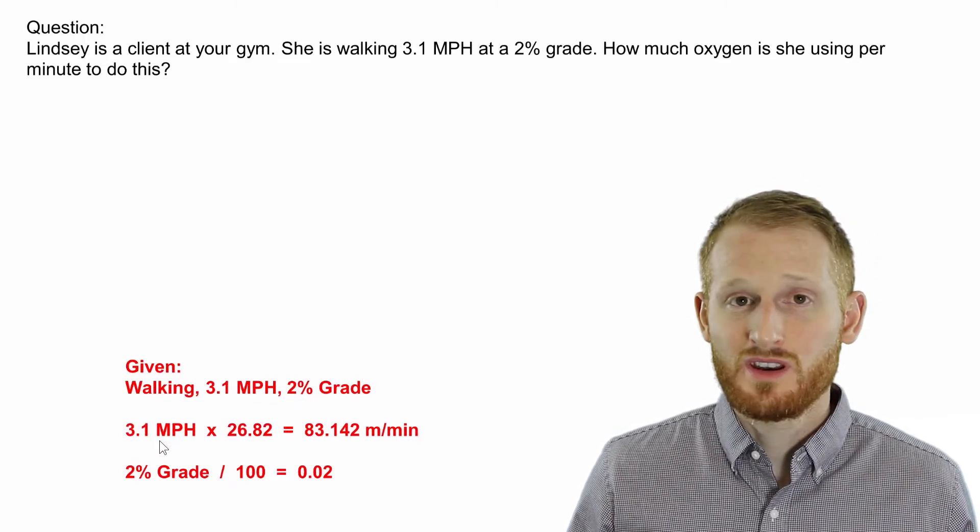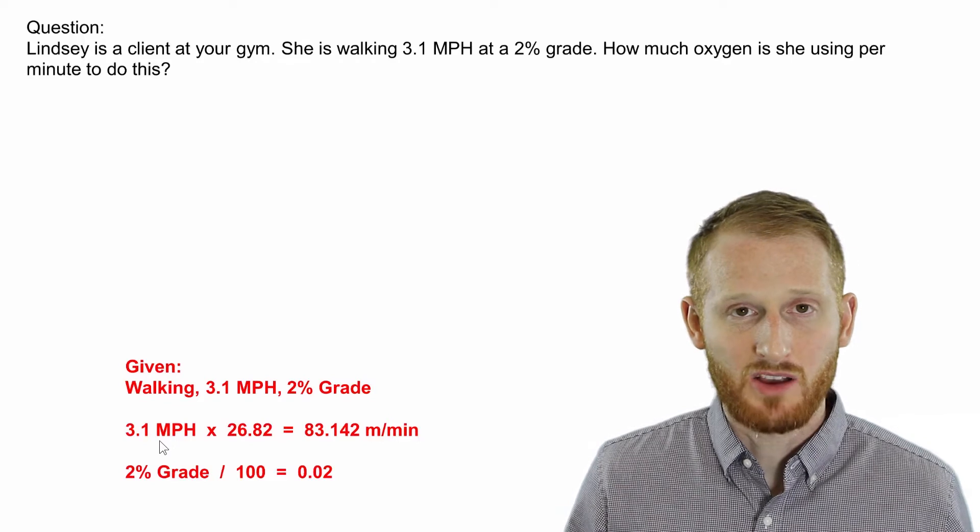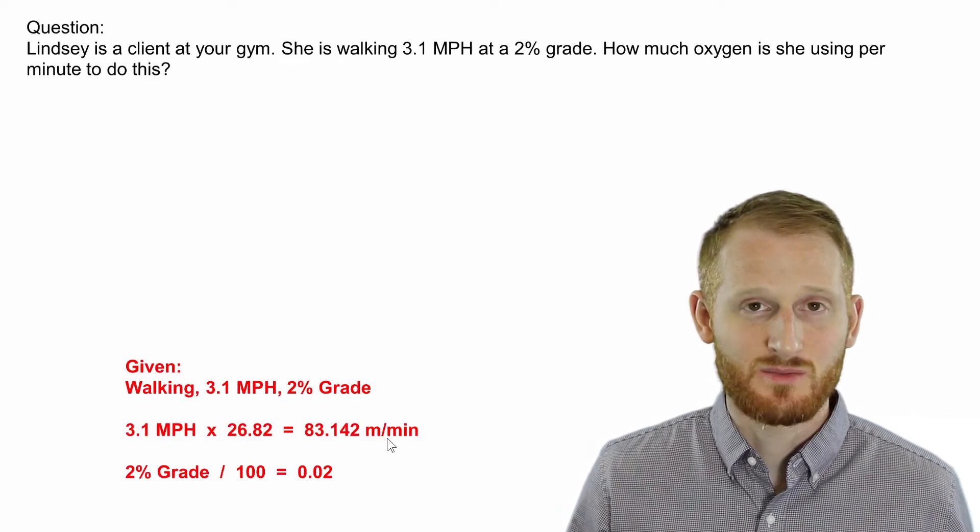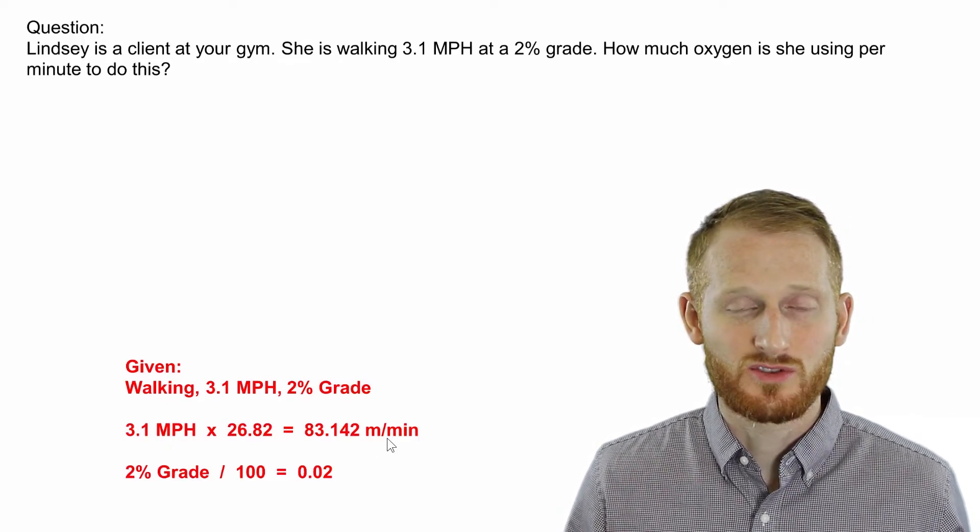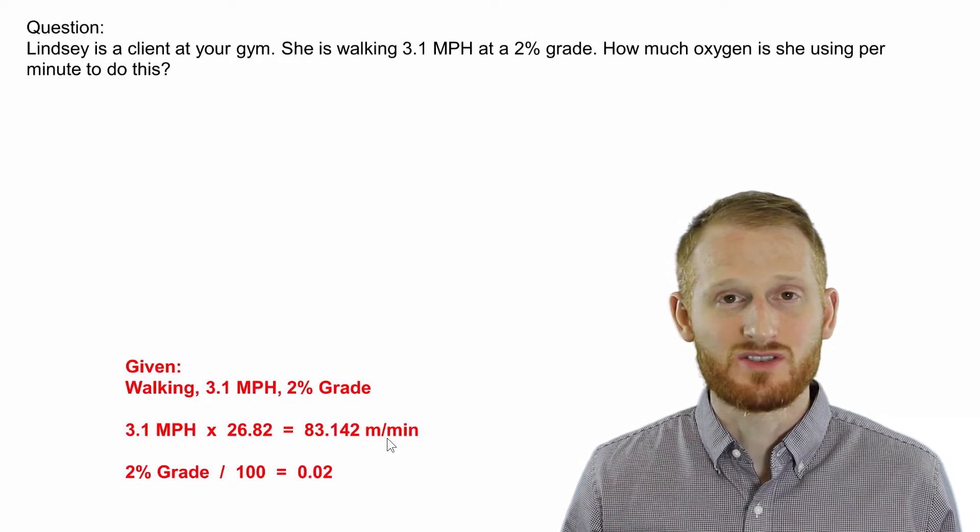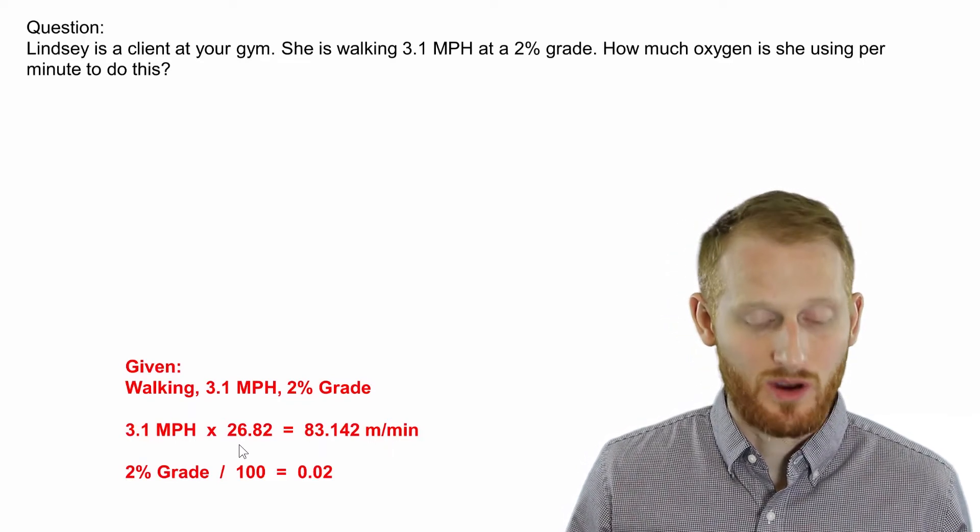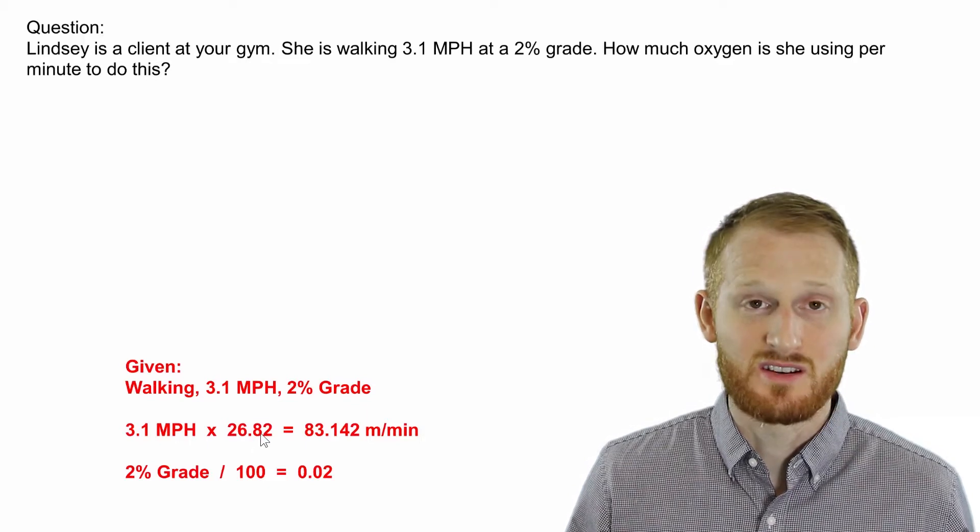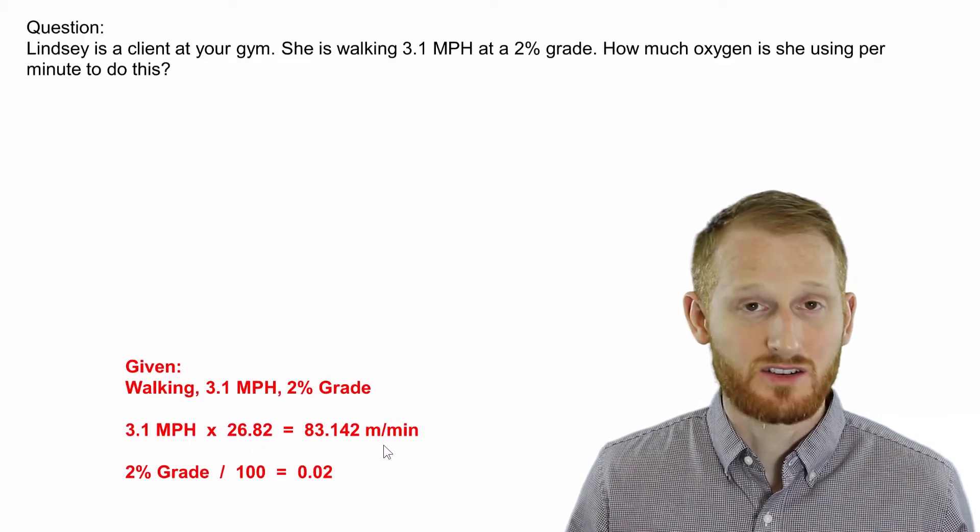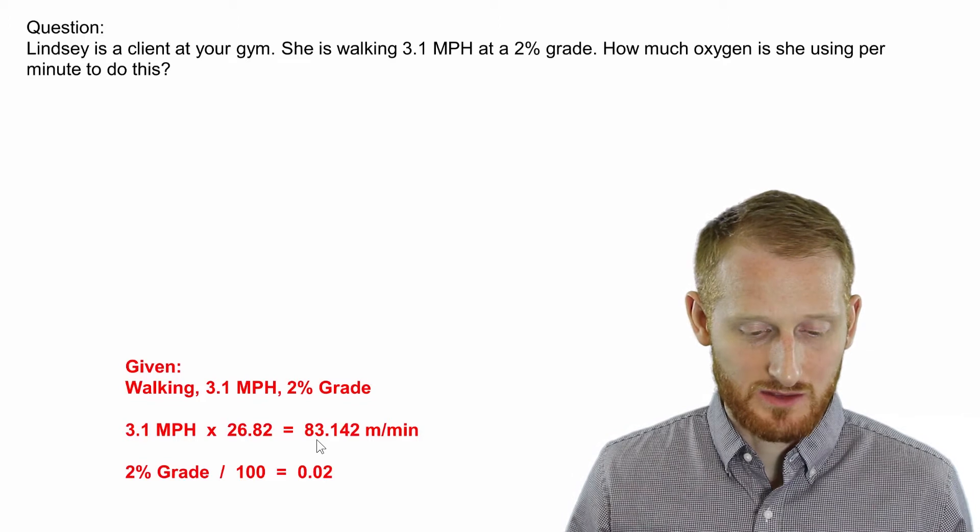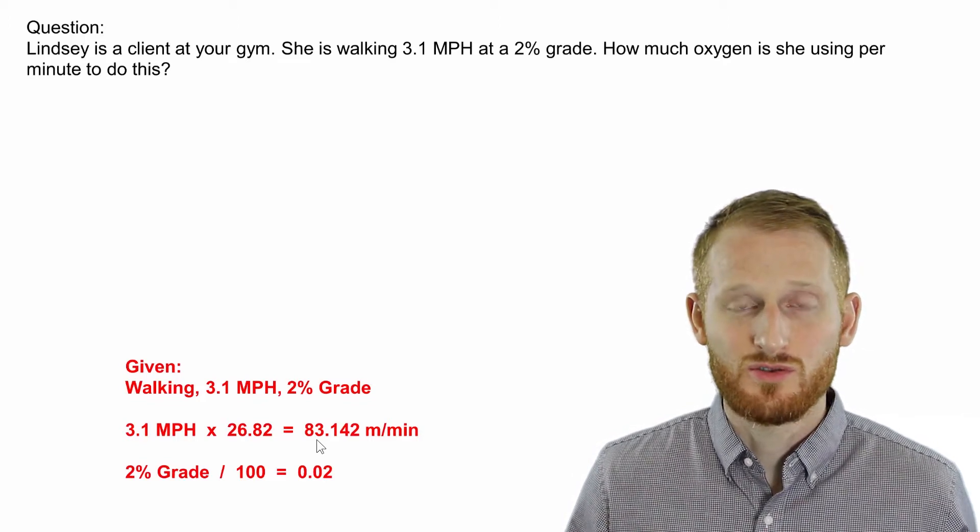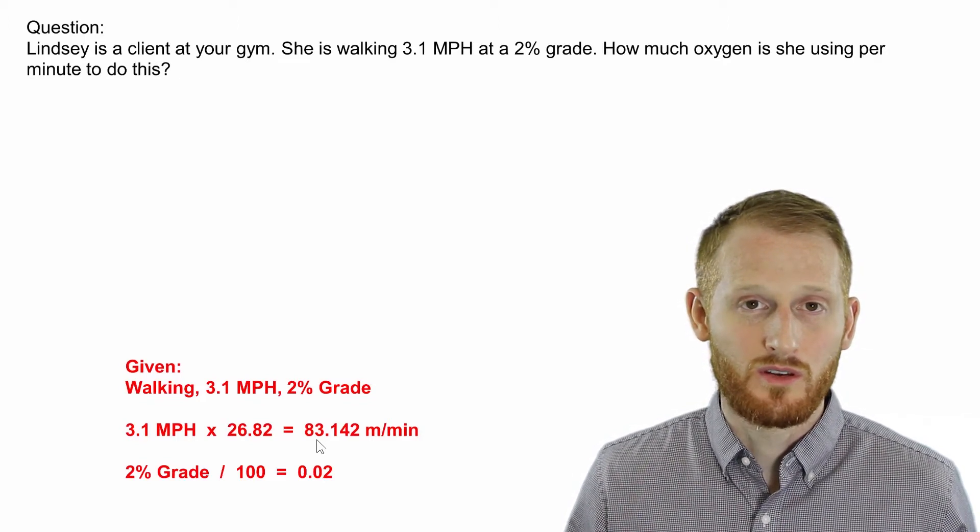First thing we need to do is convert the miles per hour to meters per minute, because meters per minute are the units for speed that the ACSM equations require. So we have 3.1 miles per hour. We multiply that by 26.82, which is the conversion factor to meters per minute, and that gives us 83.142 meters per minute for the walking speed.